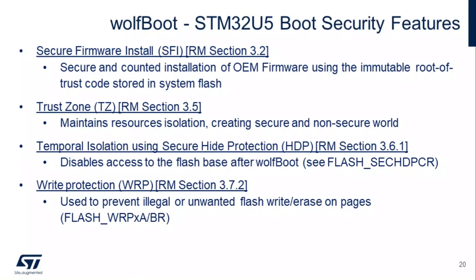The U5 has quite a few security features built in. There's Secure Firmware Install (SFI), covered in reference manual section 3.2, which is a secure counter-installation of OEM firmware using immutable root of trust code stored in system flash — a provisioning procedure from ST. This chip also has TrustZone, which provides secure and non-secure areas of flash and memory that can be isolated from each other. WolfBoot has TrustZone support in a pull request that's still a work in progress, but you're welcome to explore it. There's also temporal isolation using the secure hide protection mechanism — after you jump out of WolfBoot, the areas WolfBoot resides in are inaccessible from the user application. Support for that is available for the G0 architecture and can be adopted.